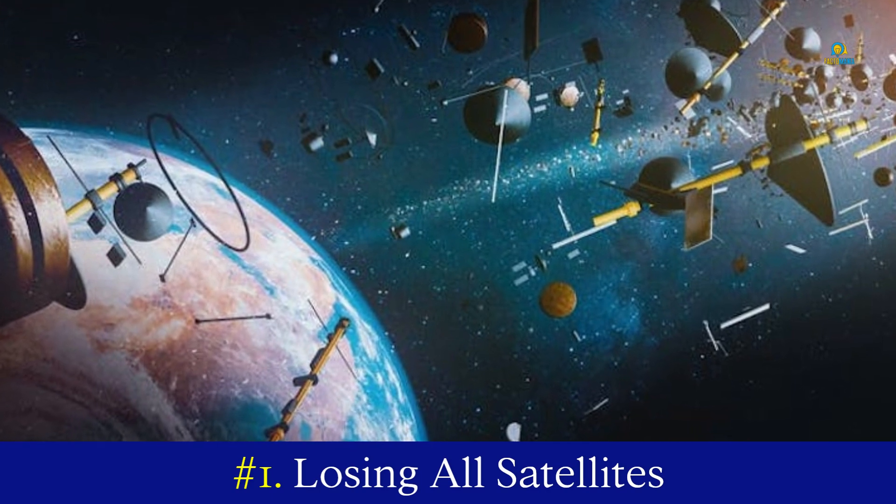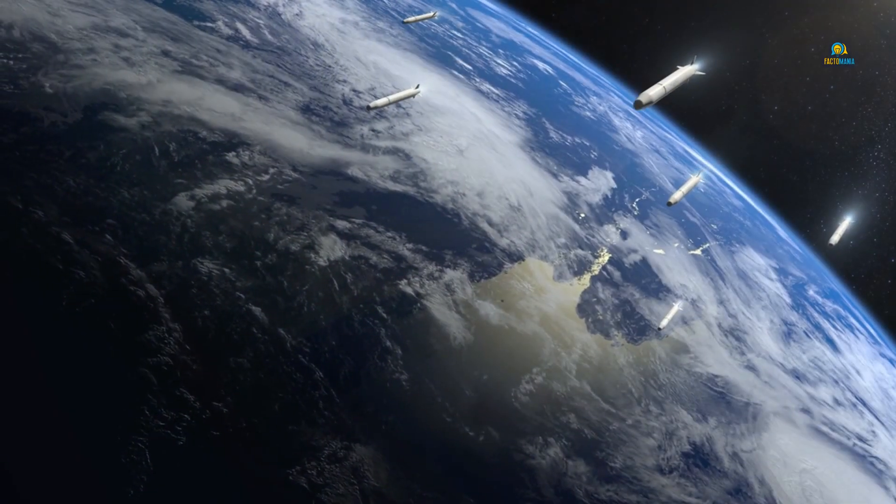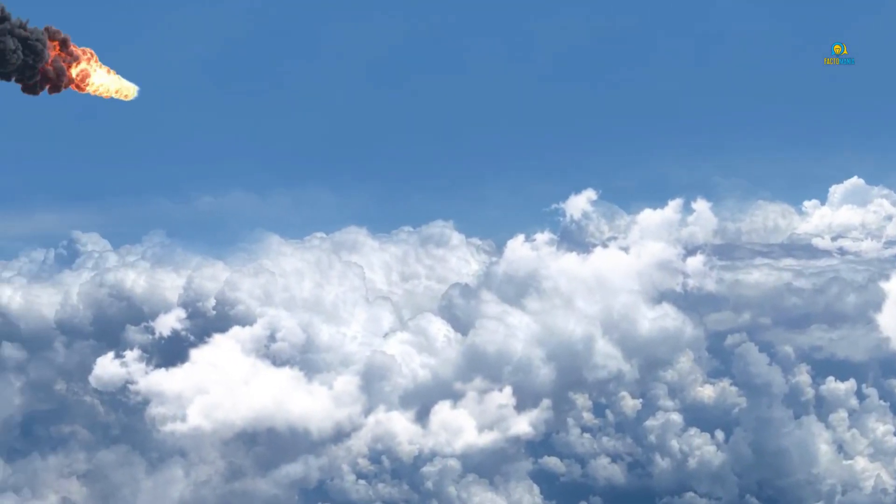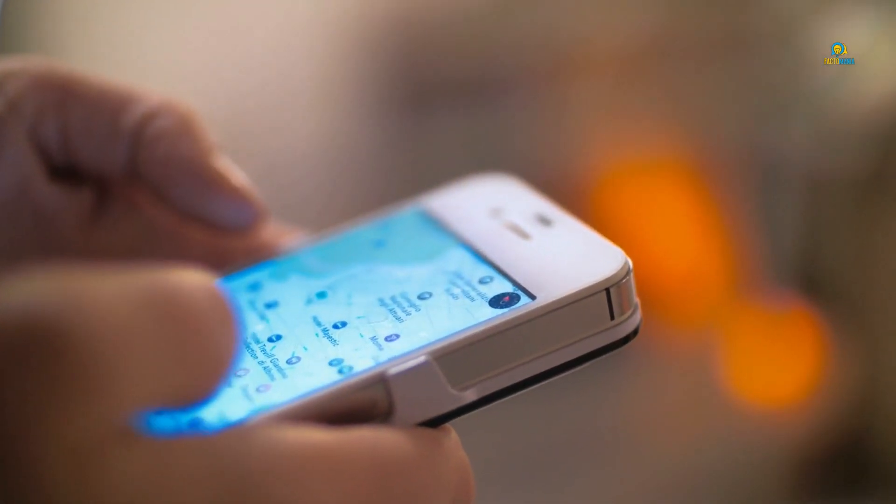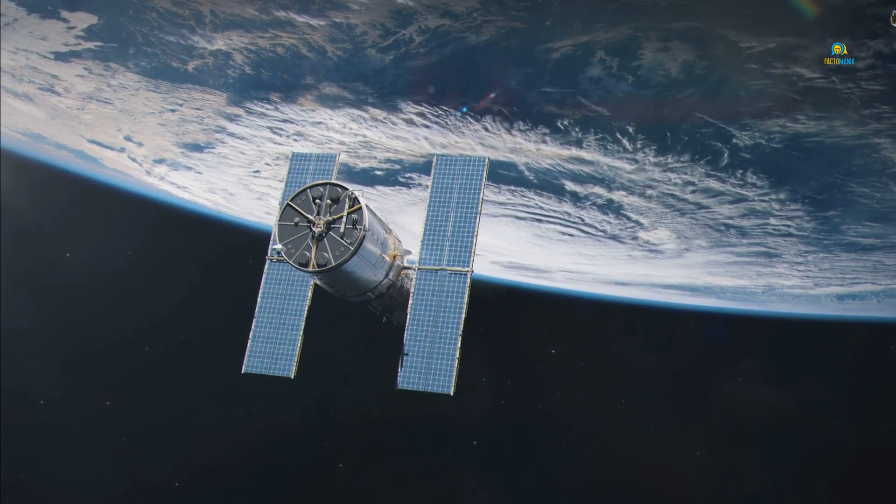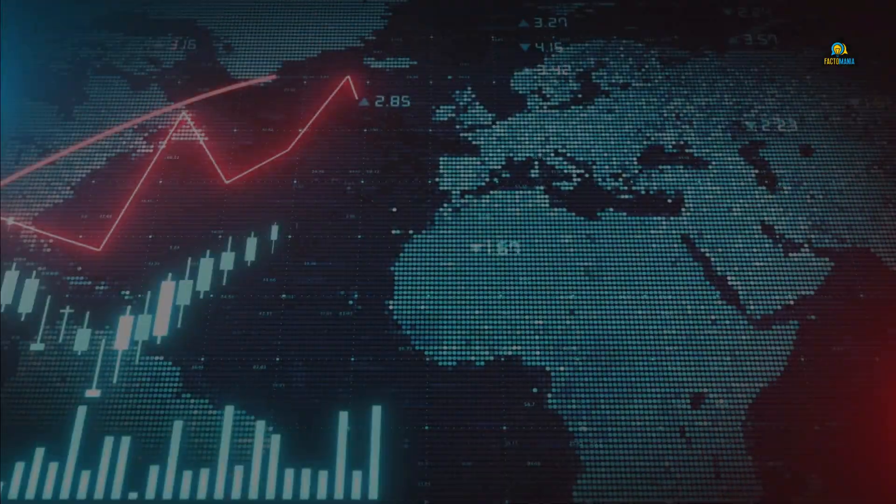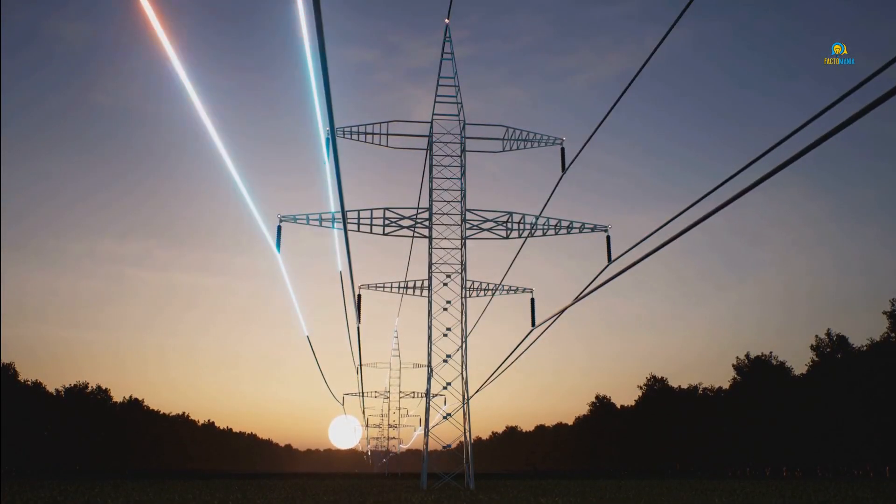Number one: losing all satellites. A massive geomagnetic solar storm or a space war could cause a massive catastrophe, losing partial or all satellite fleet. Without satellites, our ability to communicate would diminish drastically. GPS would be completely wiped out along with those systems dependent upon it. Space-based synchronization would grind to a halt, affecting everything from the financial sector to the electrical grid—basically every aspect of our lives.